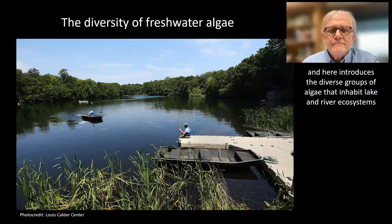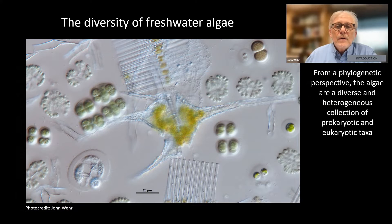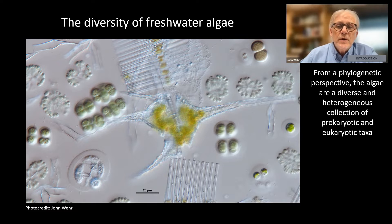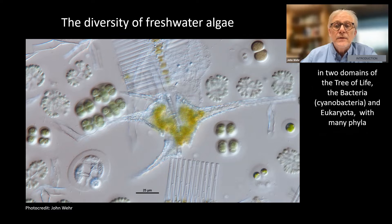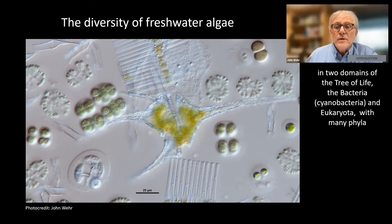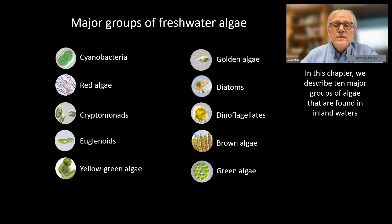Here he introduces the diverse groups of algae that inhabit lake and river ecosystems. From a phylogenetic perspective, the algae are a diverse and heterogeneous collection of prokaryotic and eukaryotic taxa in two domains of the tree of life — the bacteria, cyanobacteria, and eukaryota — with many phyla. In this chapter, we describe 10 major groups of algae that are found in inland waters.